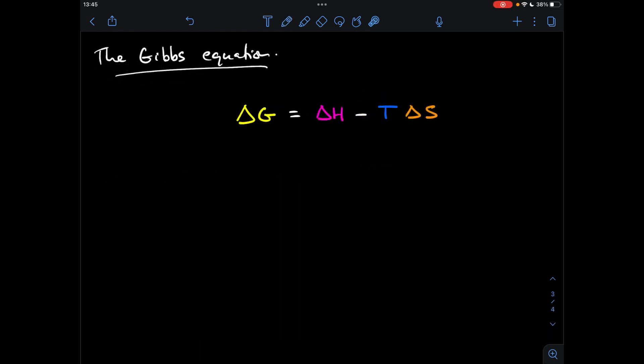So moving on to the final formula for this particular video, it's called the Gibbs equation, so there it is there, delta G, so this is one term by the way, that's why I've used the same colour. So it's not delta times G, it's delta G equals delta H minus T delta S, so T and delta S are multiplying each other there.